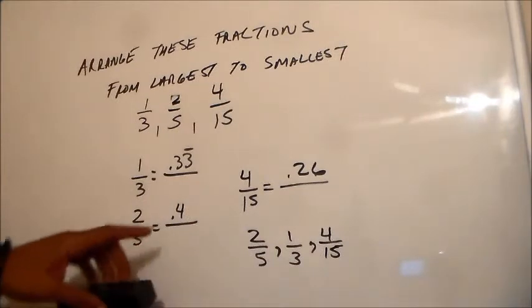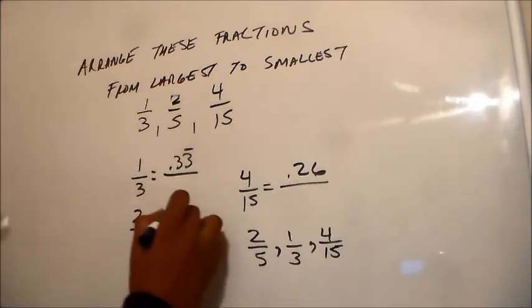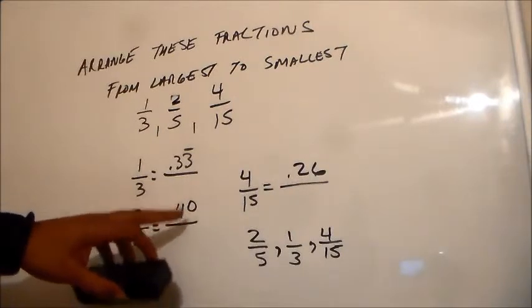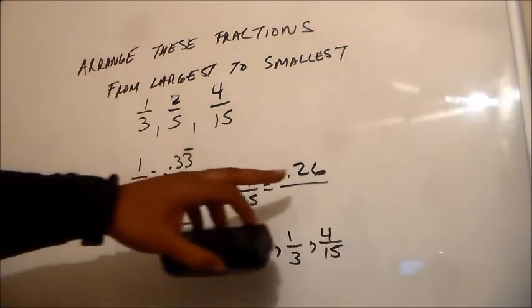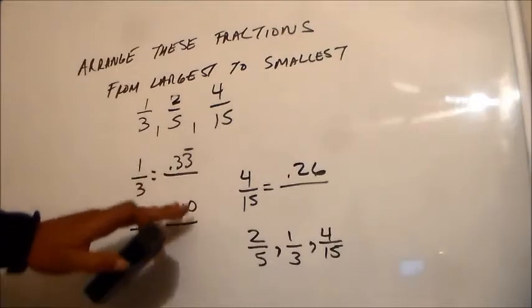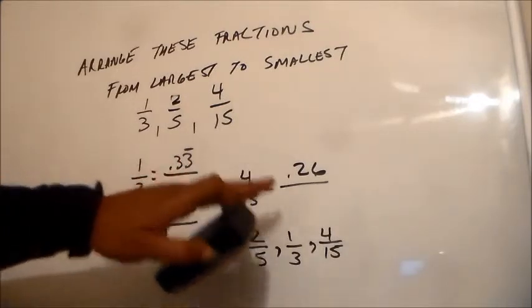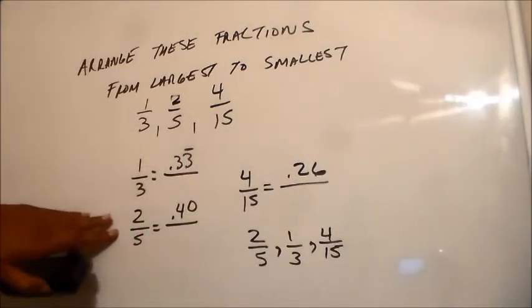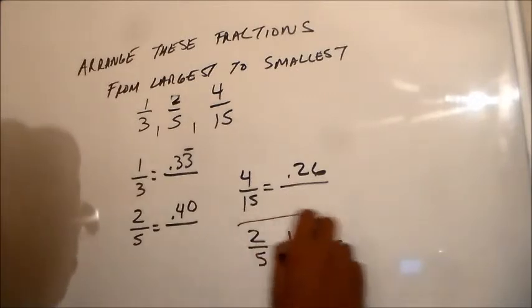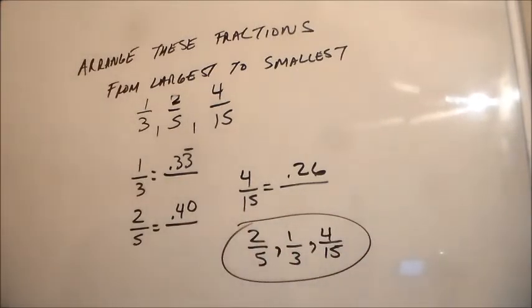Because point-forty, point-thirty-three, and point-twenty-six — don't even look at the decimals, just think forty, thirty-three, and twenty-six. So two-fifths, one-third, and then four-fifteenths. This is our final answer: our fractions from largest to smallest.